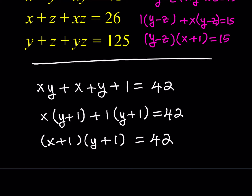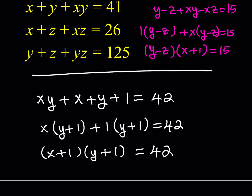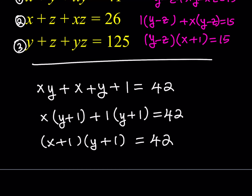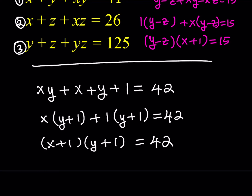Let me show you the same technique applied to all three equations. I'm numbering them equation 1, 2, and 3. For the second equation, if I add one to both sides I get xz plus x plus z plus 1, which factors as (x plus 1)(z plus 1). Adding one to both sides gives 27 on the right-hand side — don't forget that, otherwise you'll be in trouble. So from the second equation: (x plus 1)(z plus 1) equals 27.